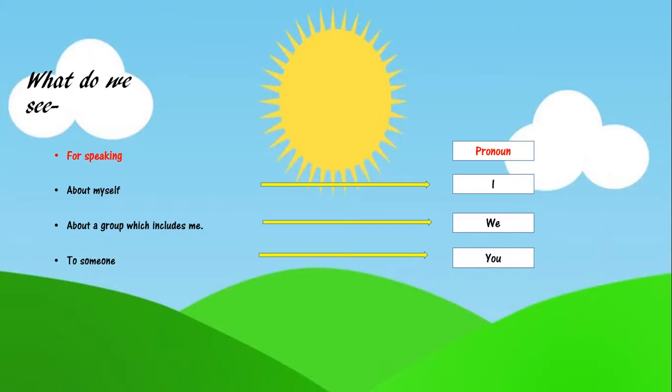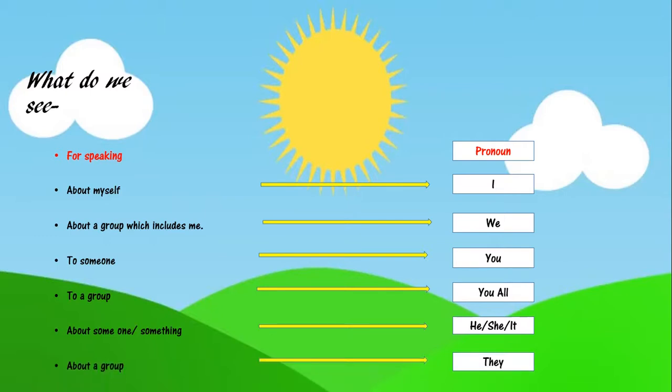And to speak to someone, when we talk about someone, we use you pronoun. And when we talk about someone or something, we use he, she, or it. And when we are talking about a group, we use the pronoun they.